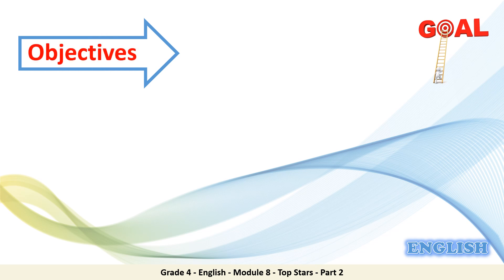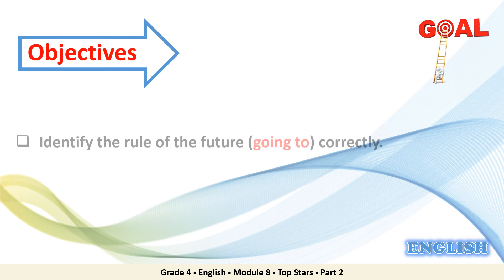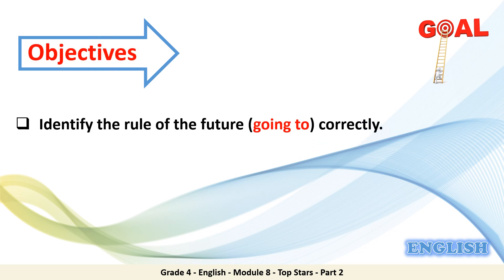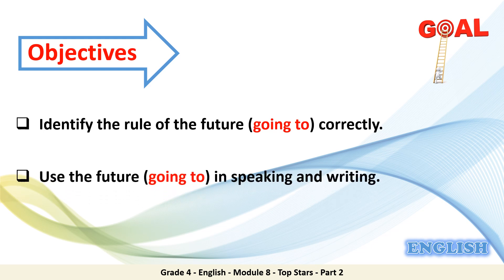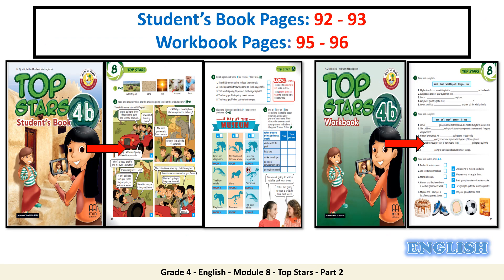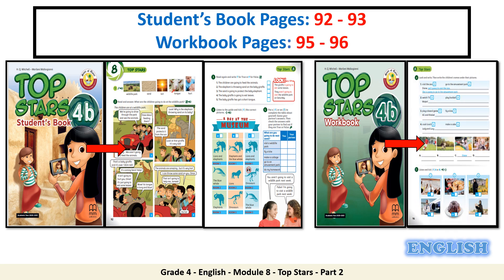By the end of this lesson, you will be able to identify the role of the future going to correctly, and use the future going to in speaking and writing. You will find this lesson in your students' book pages number 92 and 93, and workbook pages number 95 and 96.